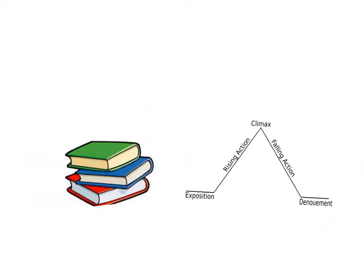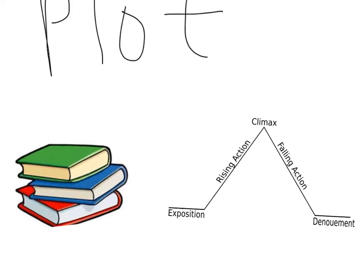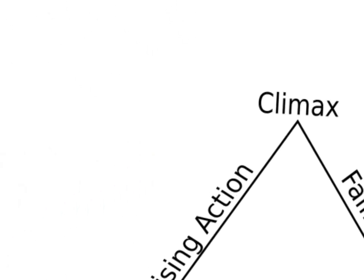Next, we will talk about plot. Plot is what happens in the story, or the sequence of events in a story. The events in a story usually lead up to a really exciting event called the climax.